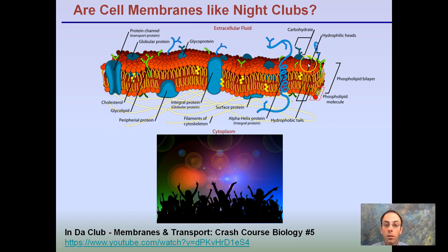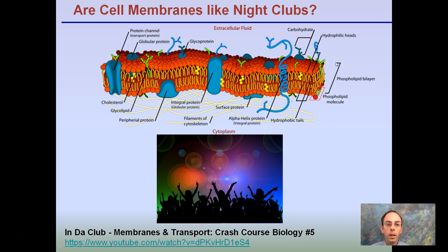Something to think about when looking at our cells and recognition: are some of them like nightclubs, allowing certain things in and bouncing or rejecting others? How does recognition, cell communication, and cell IDs come into play? This cell membrane is important — it doesn't want to let just anything come in and out; it wants to help regulate that. How are these integral proteins and the phospholipid bilayer structure coming into play? Good questions to ask and relate to cell membranes.